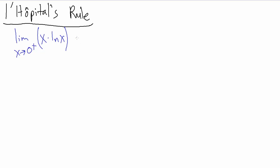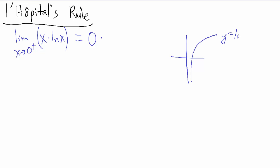As usual, the first thing we want to do is direct substitution. As x goes to 0 from the positive side, x just goes to 0. And for the natural log — if we graph the natural log function, as x comes into 0 from the right, we follow the natural log function down, and we see that it approaches negative infinity. So back in the limit, we have 0 times negative infinity.